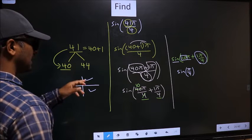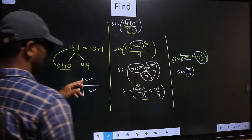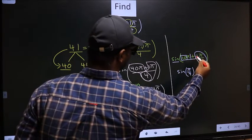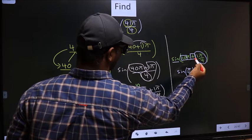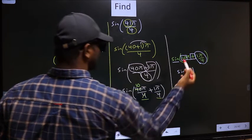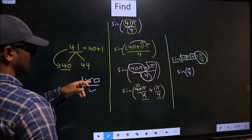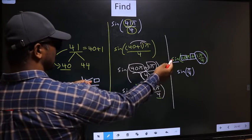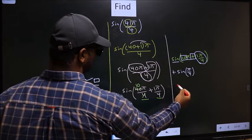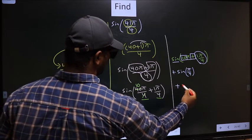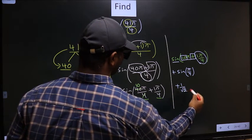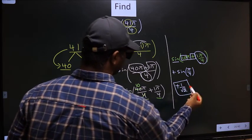Now to decide in which quadrant does it lie, we should look at this symbol. Here we have plus. So the angle lies in the first quadrant. So in the first quadrant, sin is positive. So put plus. So plus sin π by 4 is 1 by root 2. So this is our answer.